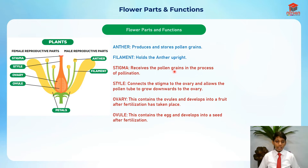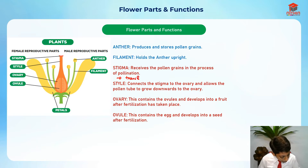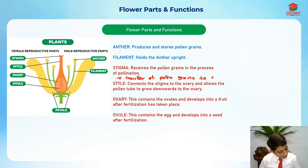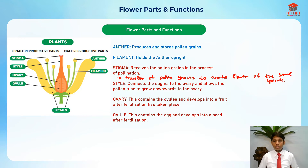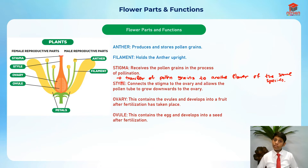The stigma receives the pollen grains in the process of pollination. Pollination is the transfer of pollen grains to the stigma of another flower of the same species. Or it could be self-pollination, where the pollen grains from the anther go into the stigma of the same flower — it varies depending on the situation.